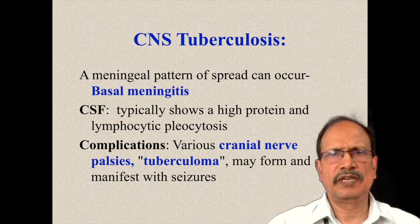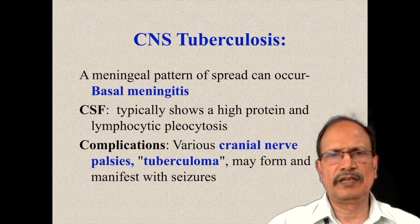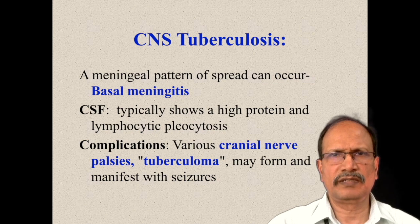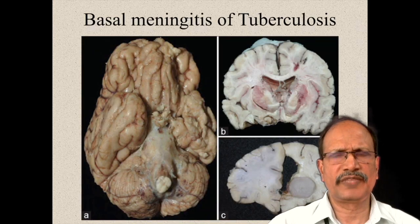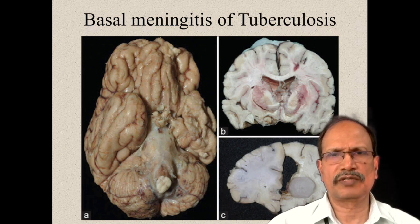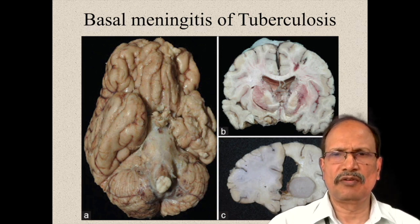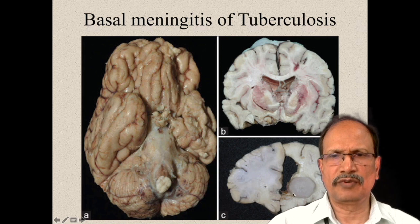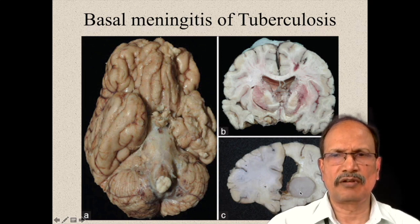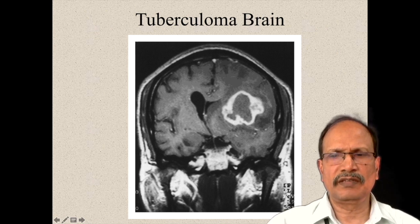CNS tuberculosis produces basal meningitis. Typically it shows high protein content and lymphocytic pleocytosis — these two findings help us identify the CSF to be of tuberculosis origin. This image shows the basal meningitis with opacity that can be appreciated. Another complication of CNS tuberculosis is the tuberculoma: the lower image shows a nodular area — nothing but a tuberculosis infection producing a tumor-like appearance. On CT, you can appreciate the presence of a ring-enhancing lesion. This ring-enhancing lesion may be due to infection, inflammation, or a tumor.